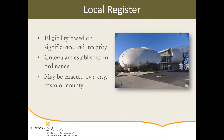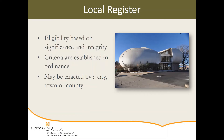In addition to the National and State Registers, your city, town, or county might also have a local register. The criteria for this local register will be described in your local preservation ordinance, and new nominations are typically approved by a local historic preservation commission or board. Just like the National and State Registers, eligibility for local designation is usually based on the significance of the property and the integrity it retains. Individually designated properties and contributing properties in a district are eligible for various financial incentives as well as protections.